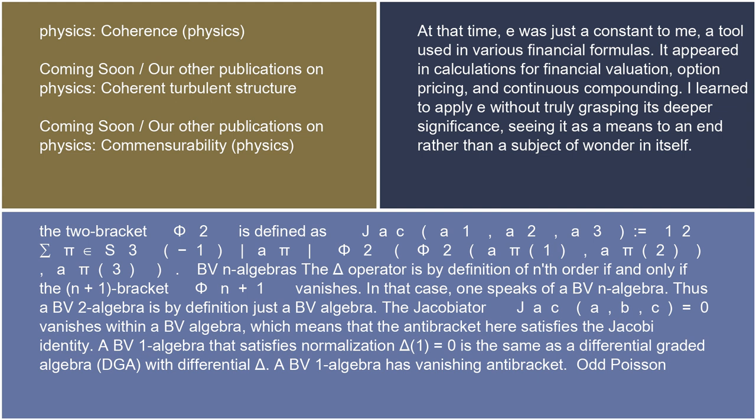The delta operator is by definition of nth order if and only if the (n+1)-bracket phi_{n+1} vanishes. In that case, one speaks of a BV_n algebra. Thus, a BV_2 algebra is by definition just a BV algebra. The Jacobiator Jac(A,B,C) = 0 vanishes within a BV algebra, which means that the antibracket satisfies the Jacobi identity. A BV_1 algebra that satisfies normalization delta(1) = 0 is the same as a differential graded algebra (DGA) with differential delta. A BV_1 algebra has vanishing antibracket.